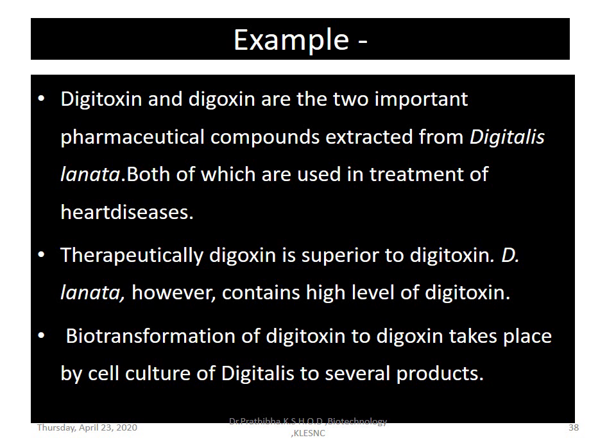Digoxin production is carried out by immobilized cells of Digitalis lanata in airlift bioreactors. Cell cultures of Digitalis or Stevia plant species can convert stevioside into steviol biosides and steviosides, which are 100 times sweeter than cane sugar.